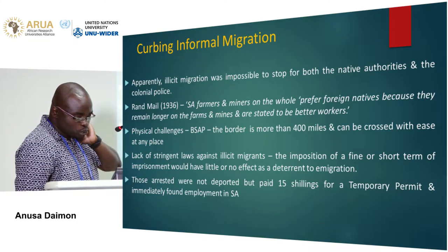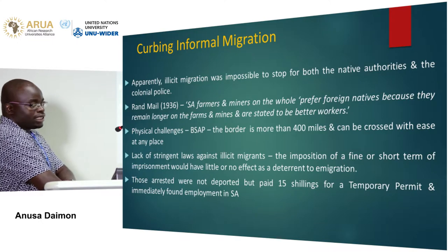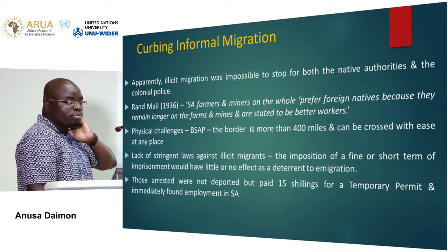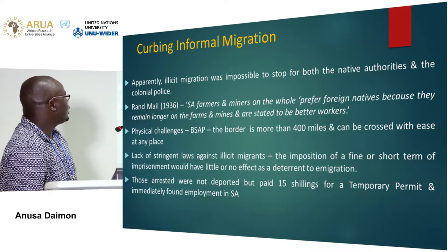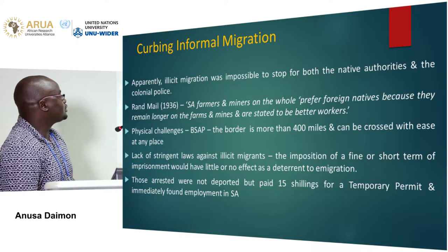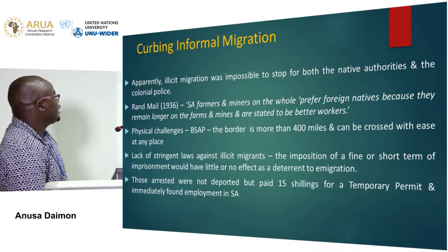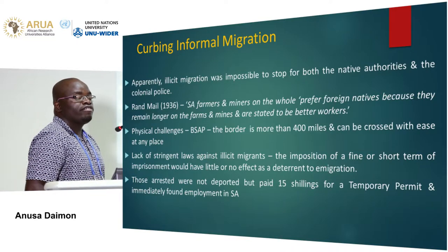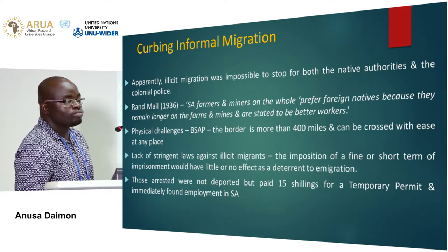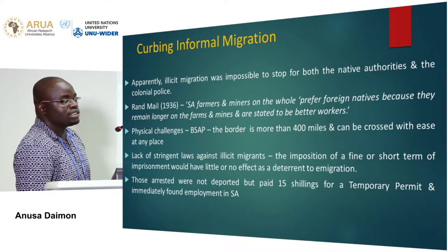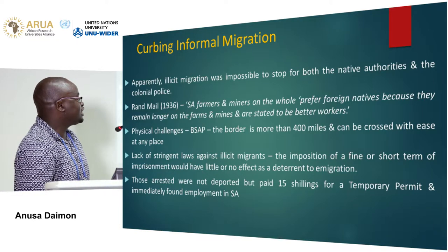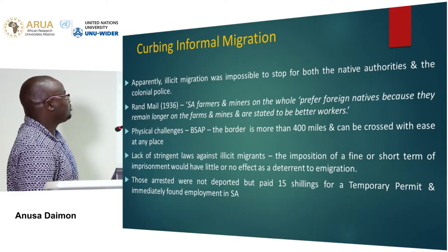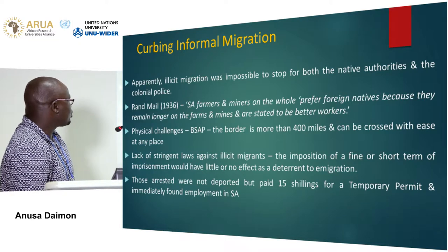The colonial authorities tried to curb the illegal influx of migrants, but one of the main challenges was that the border was so porous — so huge and so long that it was very difficult for the colonial police to monitor movement along it. This is also prevailing even today, where both South African and Zimbabwean authorities find it very difficult to control or manage the border. There is a lot of illegal movement of both people and contraband, with smuggling taking place today — cars stolen in South Africa finding their way into Zimbabwe because the border is very long.